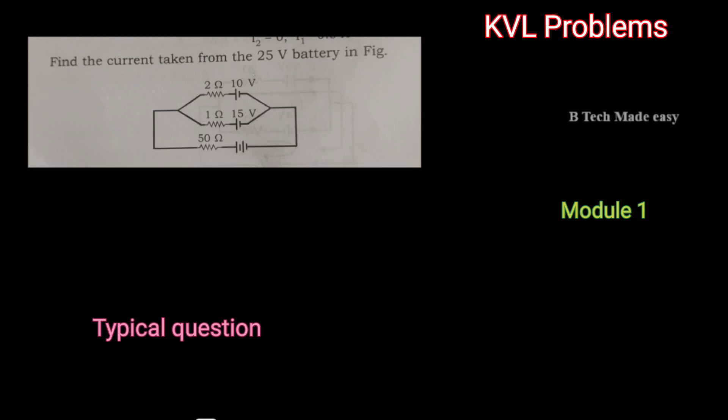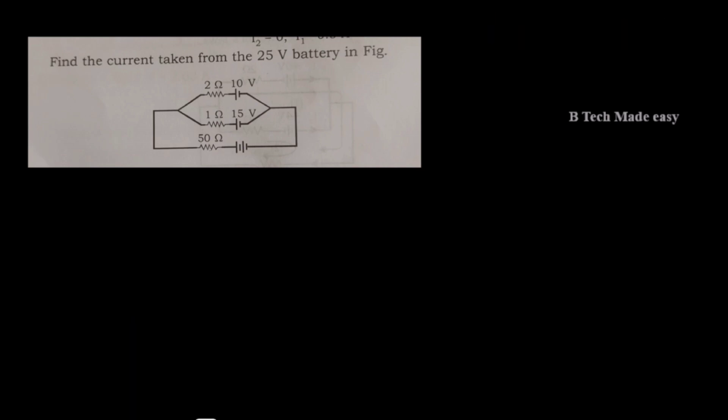Find the current taken from a 25V battery as shown in the figure. Here we have two batteries and the internal resistance. We have to use the internal resistance and find the current.